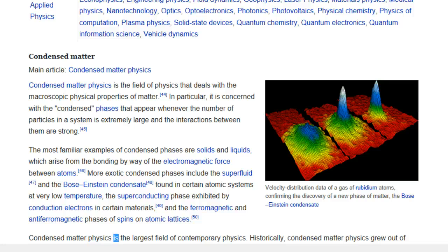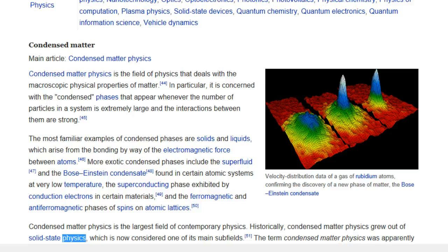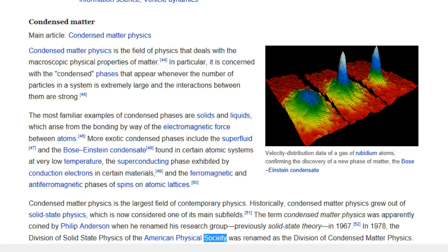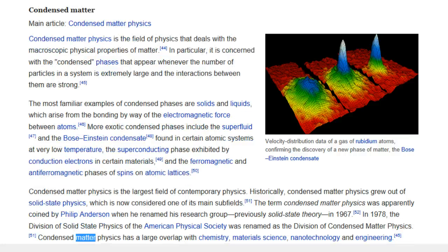Condensed Matter Physics is the largest field of contemporary physics. Historically, condensed matter physics grew out of solid-state physics, which is now considered one of its main sub-fields. The term condensed matter physics was apparently coined by Philip Anderson when he renamed his research group, previously solid-state theory, in 1967. In 1978, the division of solid-state physics of the American Physical Society was renamed as the Division of Condensed Matter Physics. Condensed matter physics has a large overlap with chemistry, materials science, nanotechnology, and engineering.